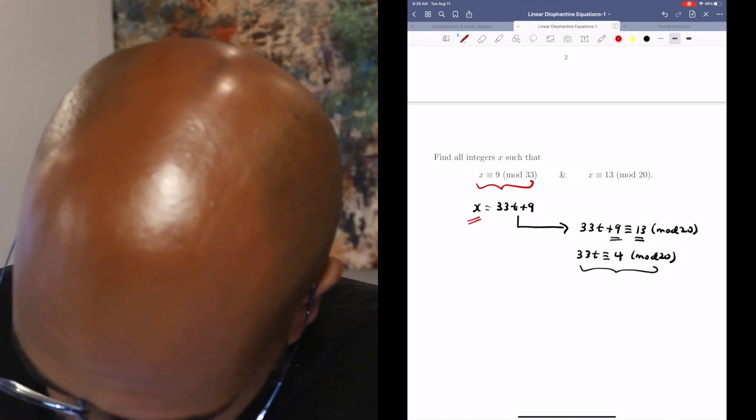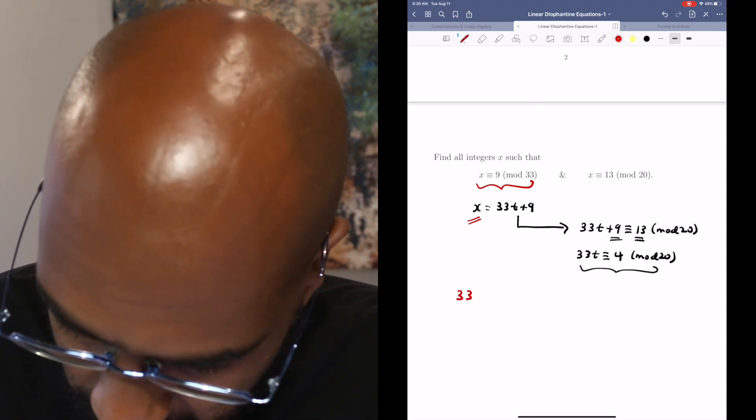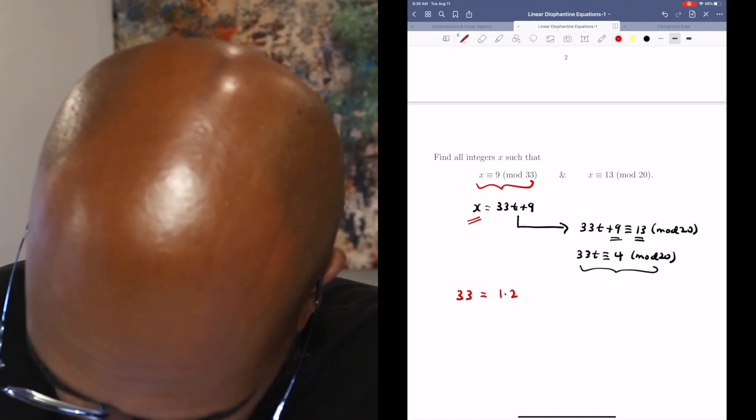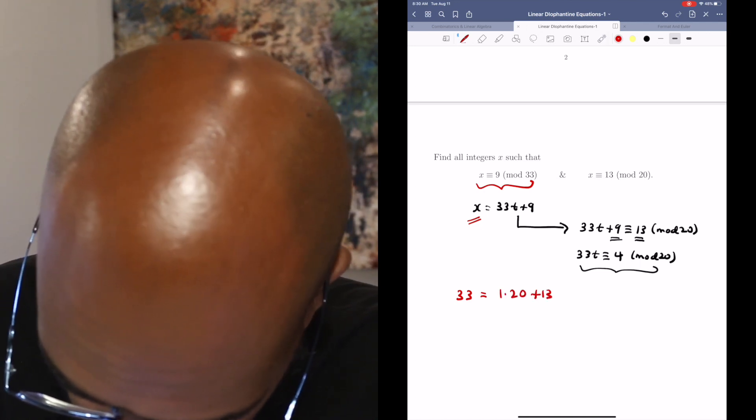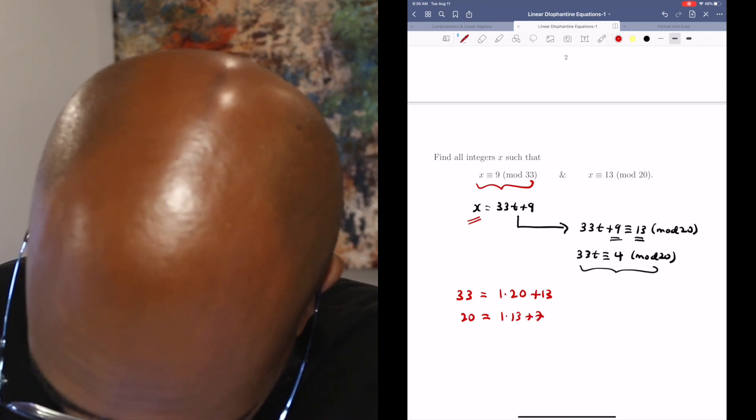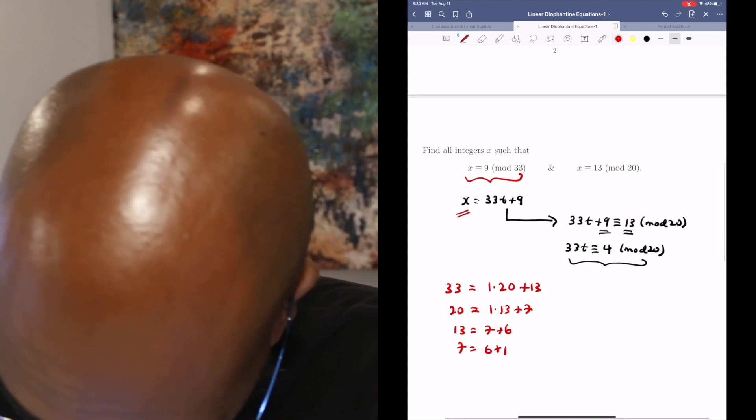So we'll use the Euclidean algorithm with 33 and 20. 33 is 1 times 20 plus 13, and then 20 is 1 times 13 plus 7, and 13 is 7 plus 6, and 7 is 6 plus 1.